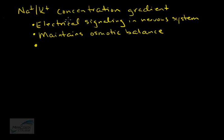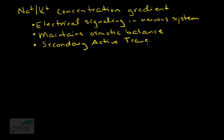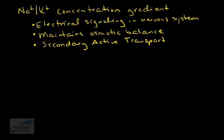A second function of the concentration gradient is maintaining an appropriate osmotic balance — an appropriate concentration of ions inside and outside the cell — which is important for regulating water flow and preventing excess water from moving in or out of cells. Another use of this gradient is secondary active transport, where the movement of sodium and potassium to establish the gradient is primary active transport, and once established, it can drive the movement of other solutes against their concentration gradient.